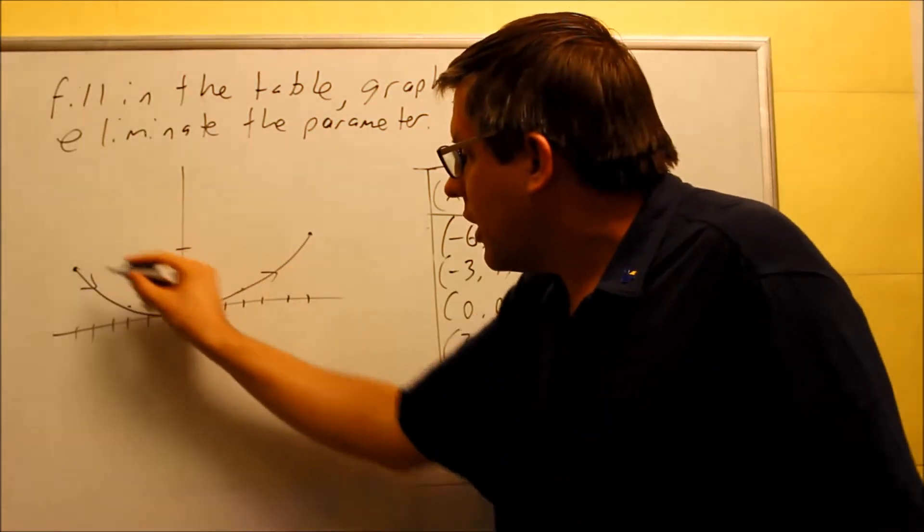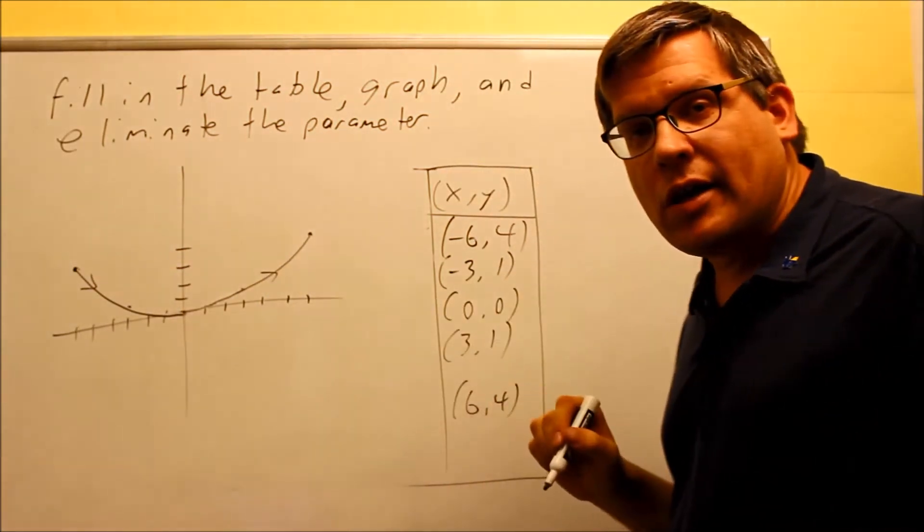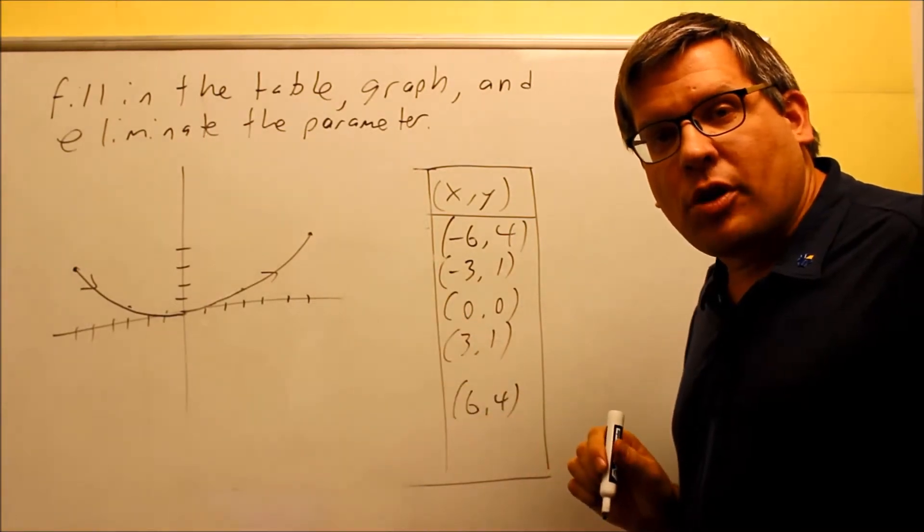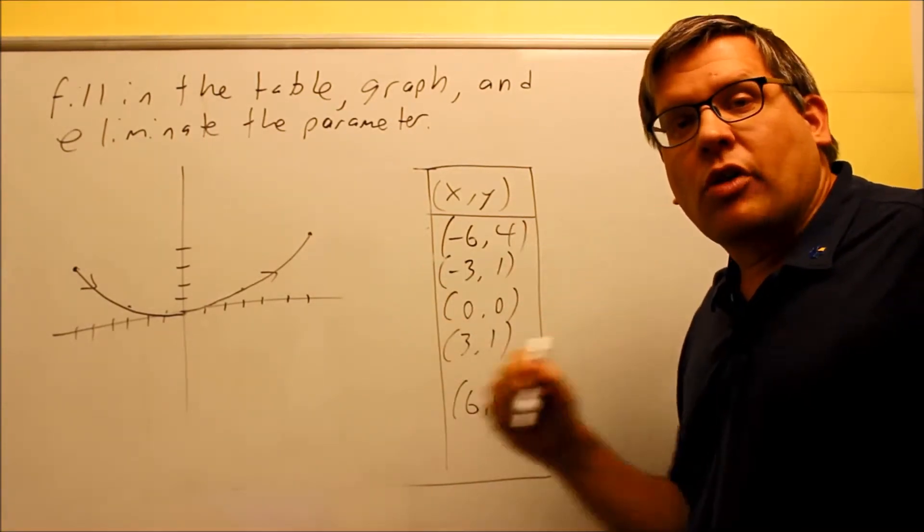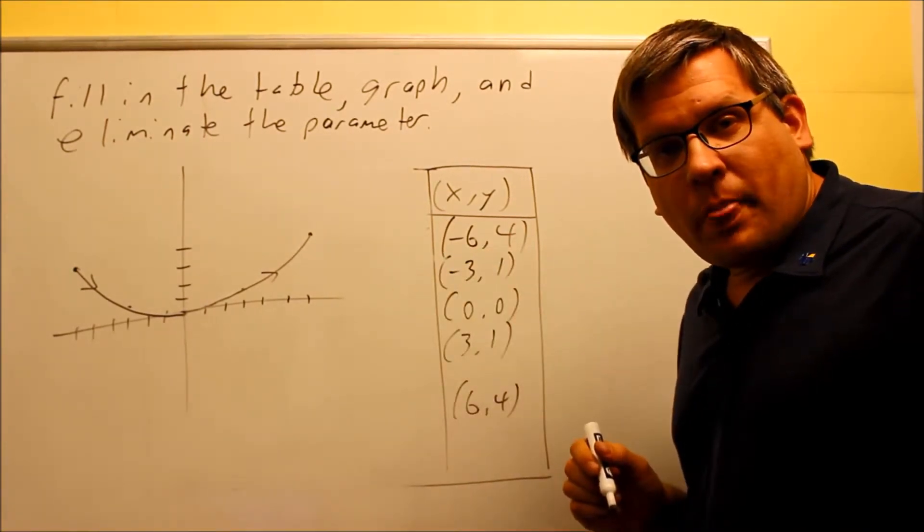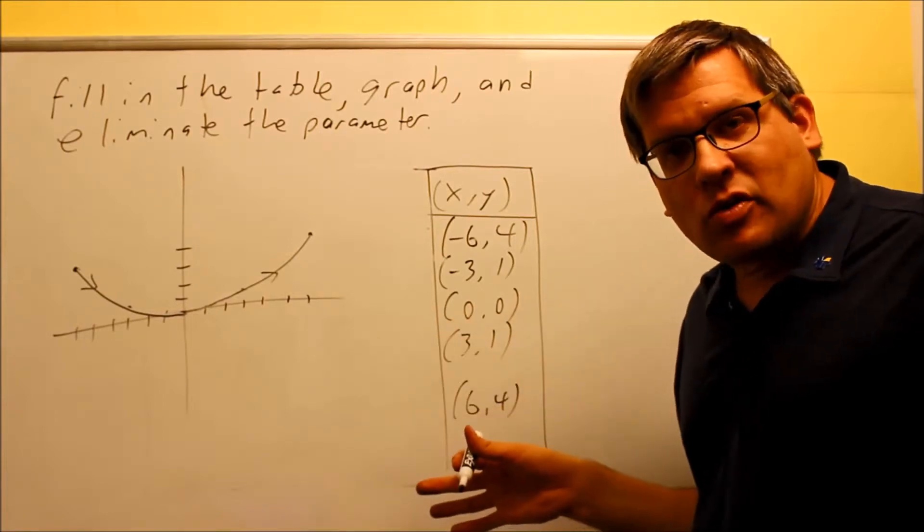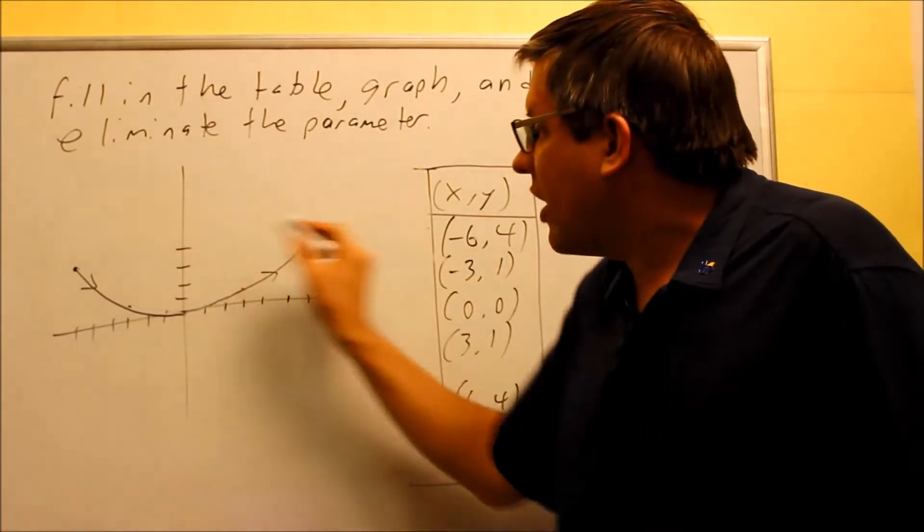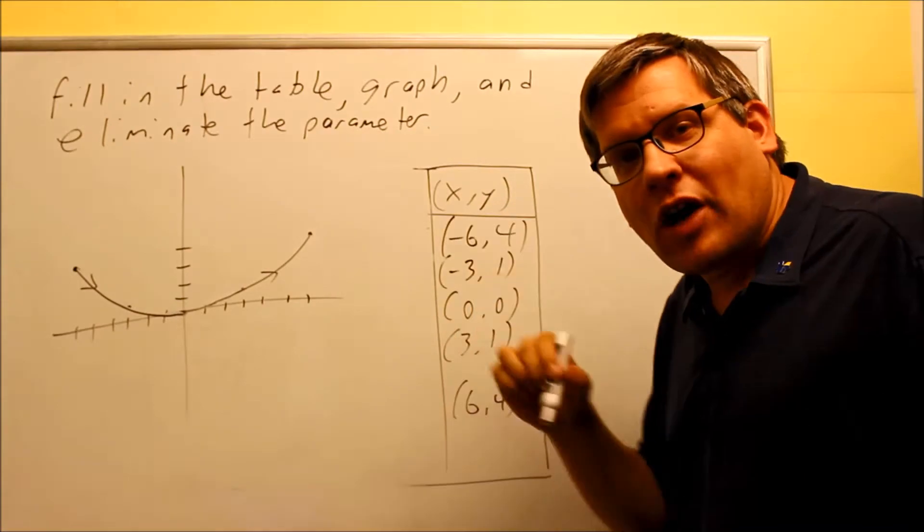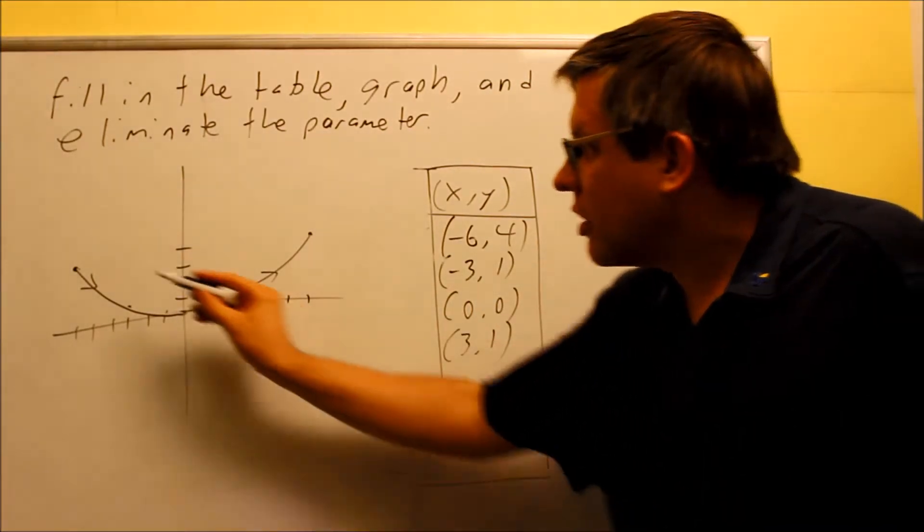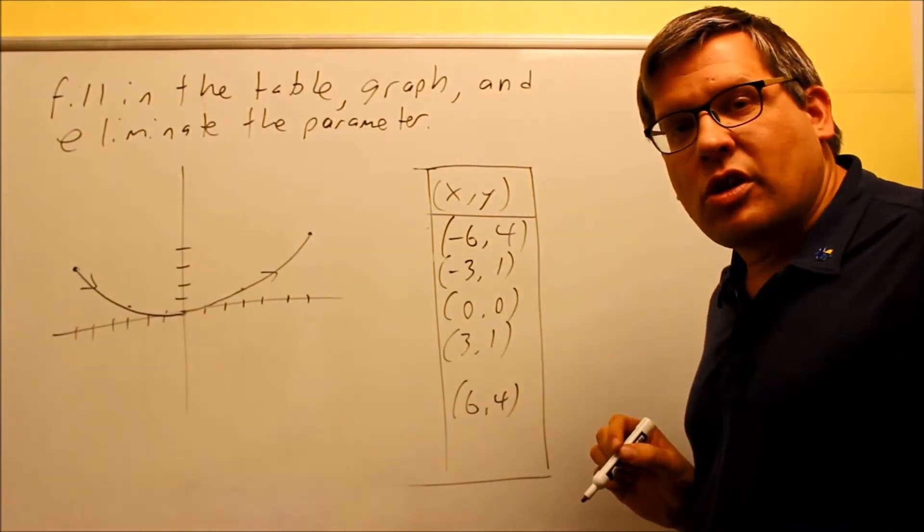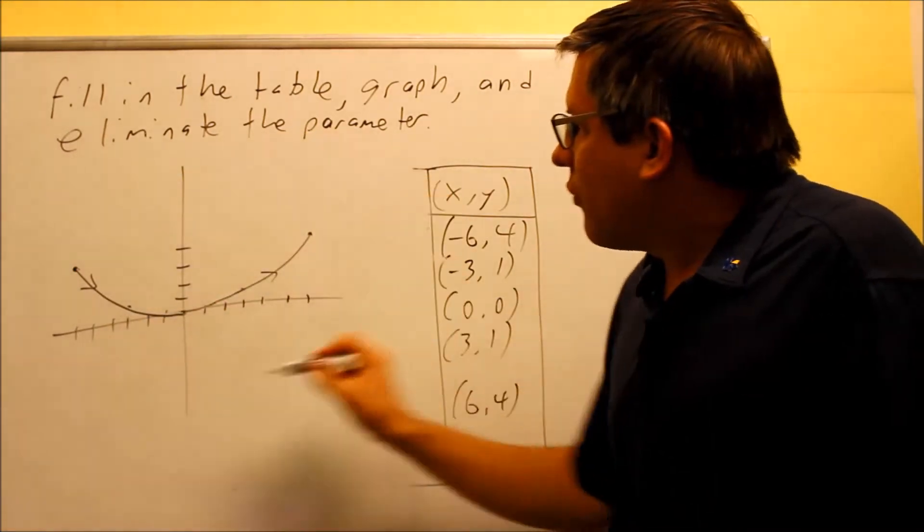So we're only looking at this portion of the graph. The reason why is because when we had this whole table up here, the t values only went from negative 2 to 2. So because we don't have any other t values there, that's why the graph does not exist at that point. We're only graphing between negative 2 and 2. That's why you have closed circles on each end. So this is what the graph would look like.